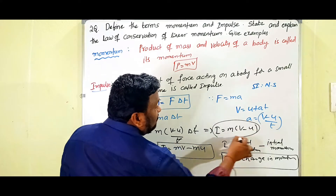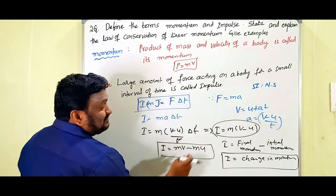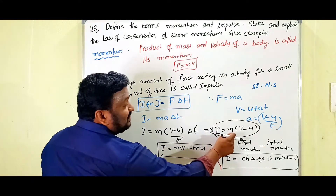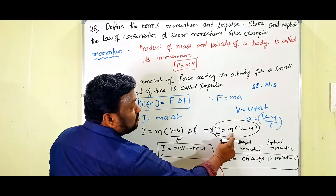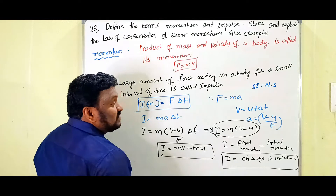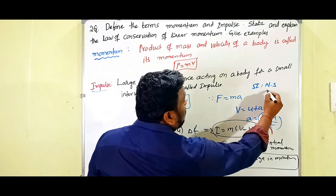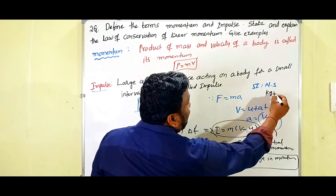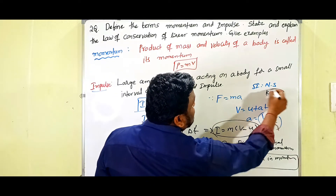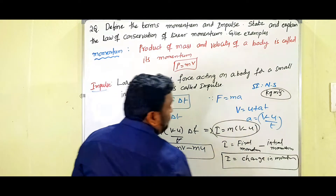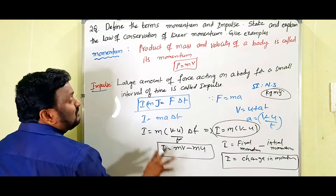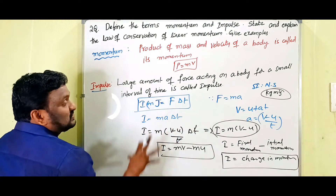According to this formula, the units are also consistent: impulse equals change in momentum, so the units change to kg·m/s. That gives us two marks — momentum and impulse are now defined.